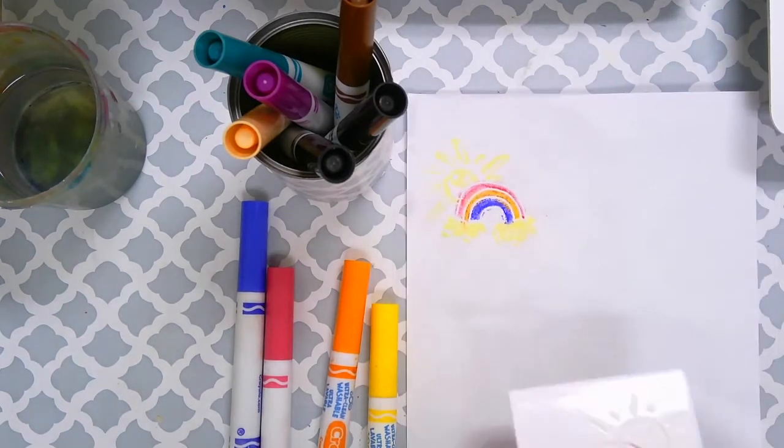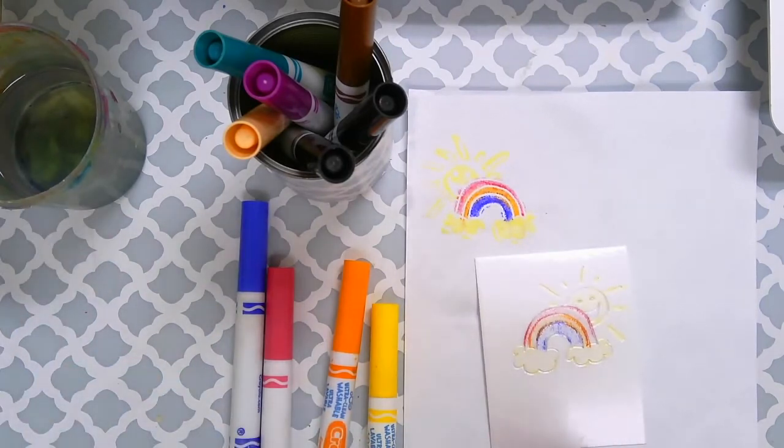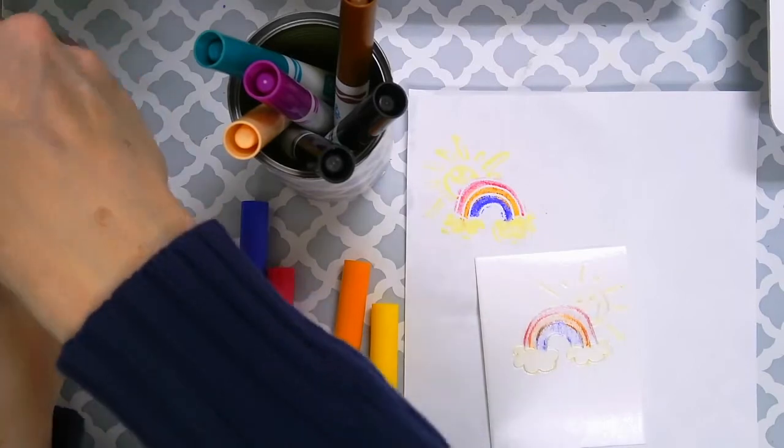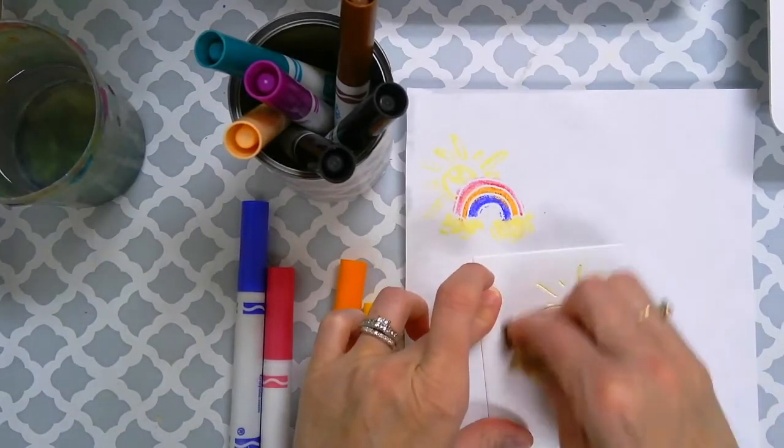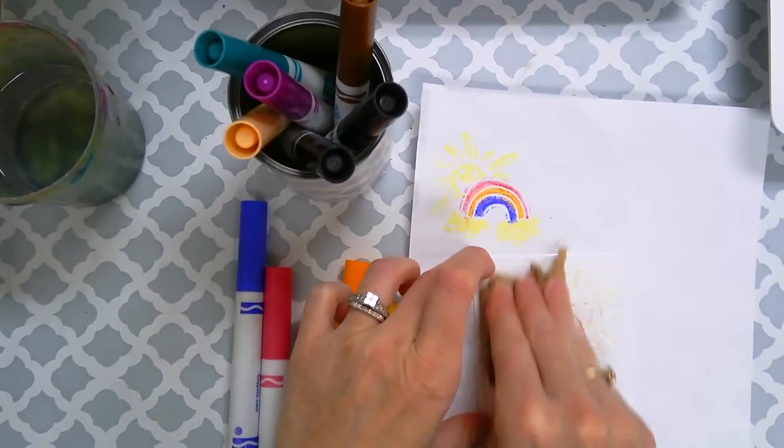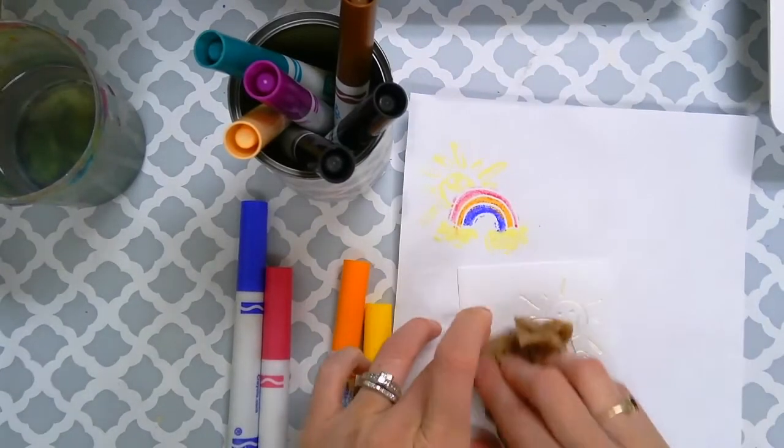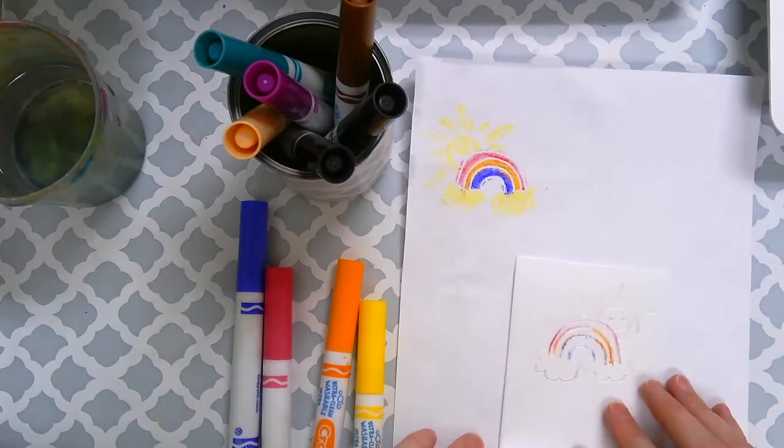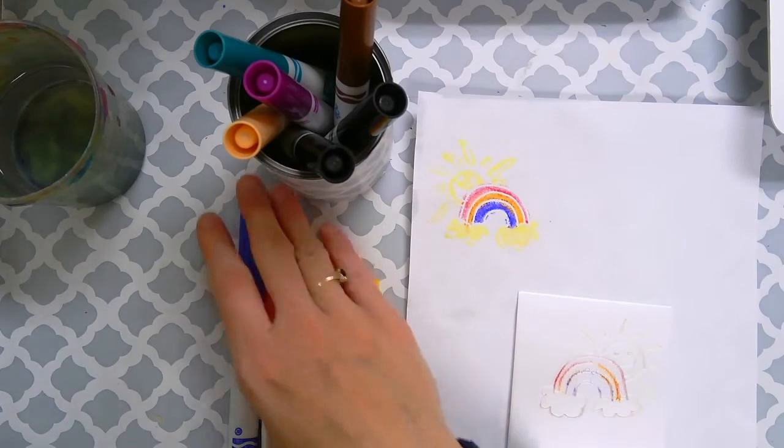And then guys, you want to take this color off because you want to do some different ones with different colors. So what you do is you'll wet a paper towel and you just rub right over it and it'll get that first color off. Maybe not all of it will be gone but it'll be enough for you to do another stamp. So there we go, I'm going to try another one and you just repeat it all over your paper wherever you want.